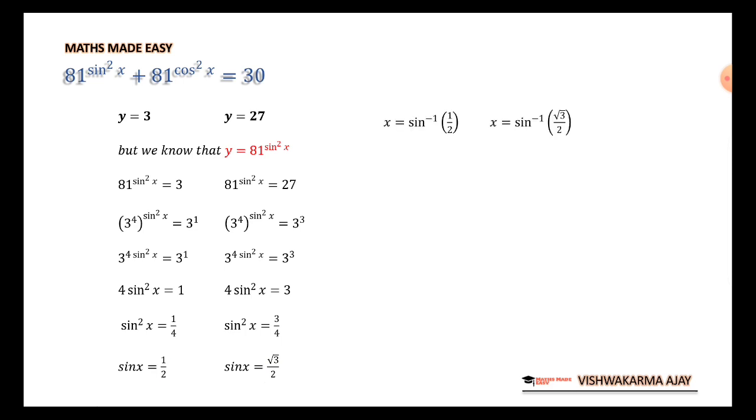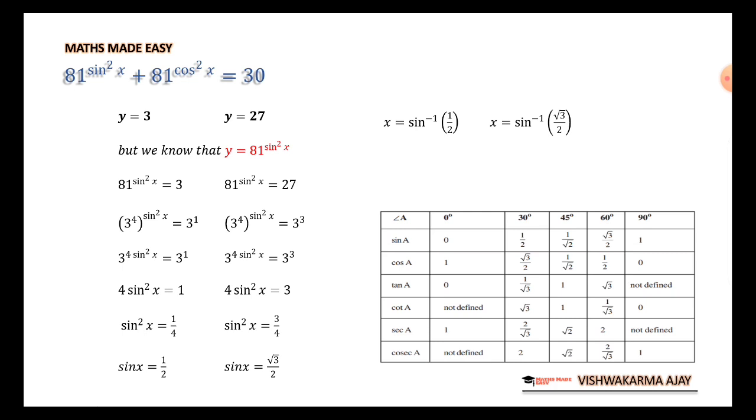Now, x is equal to sin inverse 1 upon 2, sending the sin to the other side. x is equal to sin inverse root 3 upon 2. In this trigonometric table, you can see the value of sin is 1 upon 2 when angle is 30 degree. So, the x is 30 for this one. The value of sin is root 3 upon 2 when angle is 60 degree. So, the value of x are 30 degree and 60 degree.